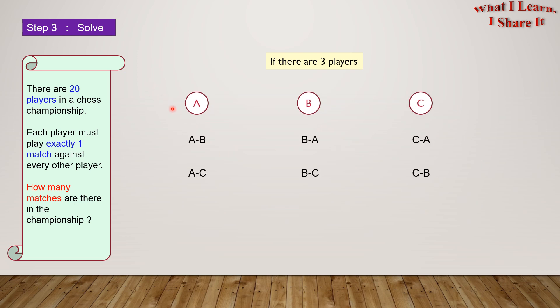So out of all these combinations, the unique combinations are A-B, A-C, and B-C. So the number of combinations equals 2 plus 1 equals 3.